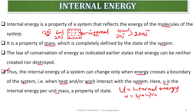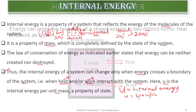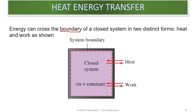If a system has 12 kilojoules of energy, this energy can change only when energy crosses the boundary — when some energy moves into or out of the system through the boundary. Energy moves in or out of a system only in the form of heat or work. Energy can cross the boundary of a closed system in two distinct forms only: heat and work.